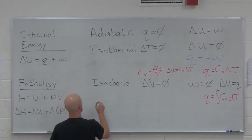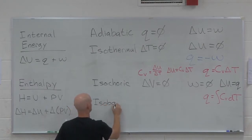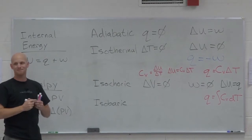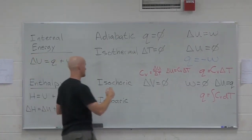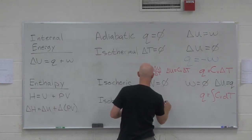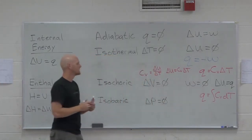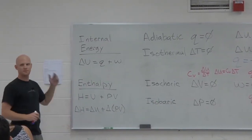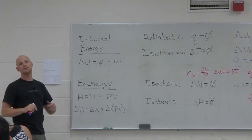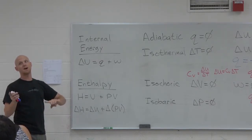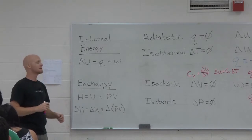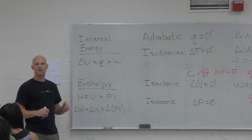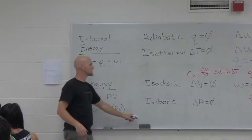Let's go to isobaric. What does isobaric mean again? Constant pressure. So no change in pressure. And if there's no change in pressure, you might look and think you don't see anything useful — work is P delta V, but it's delta V not delta P in work, so that's not really going to do anything against us. You might not see it initially, so we've got to do a little extrapolation to get there.